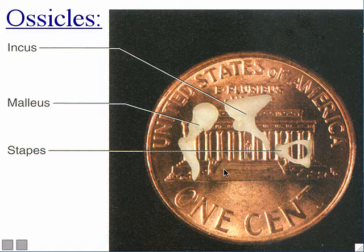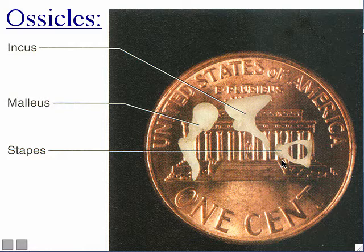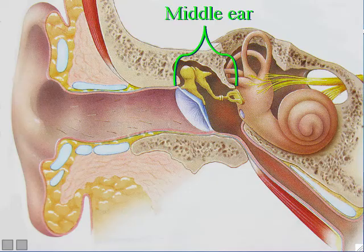Each of these ossicles has a name. The first one, closest to the tympanic membrane, is called the malleus, which means hammer — you can kind of see it looks vaguely hammer-shaped. The second ossicle bone is called the incus, which means anvil — where blacksmiths pound on iron with their hammers. The third ossicle bone is called the stapes, which means stirrups, like where you put your legs when sitting on a horse. Those three bones together are called the ossicles.